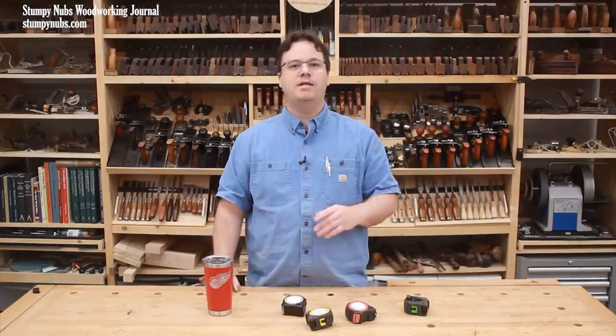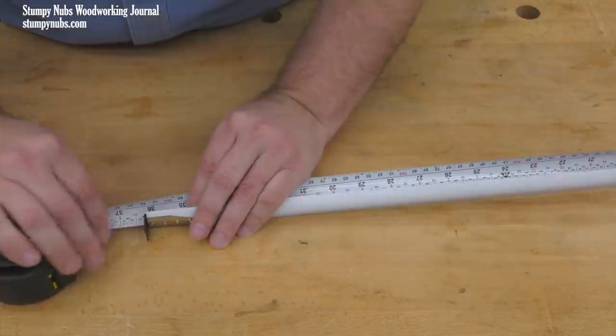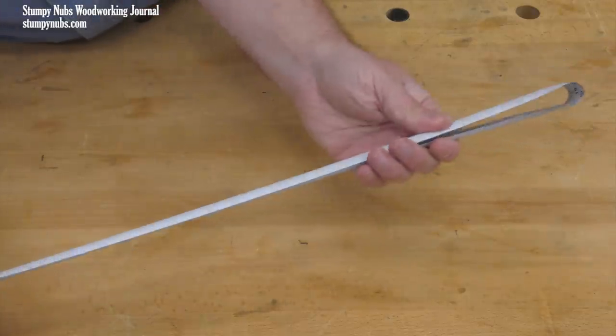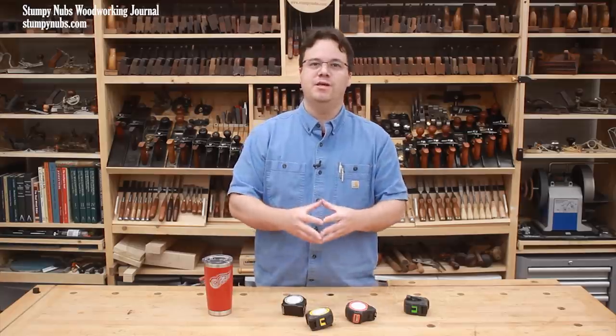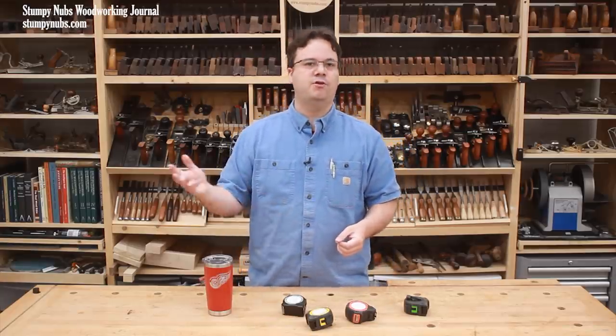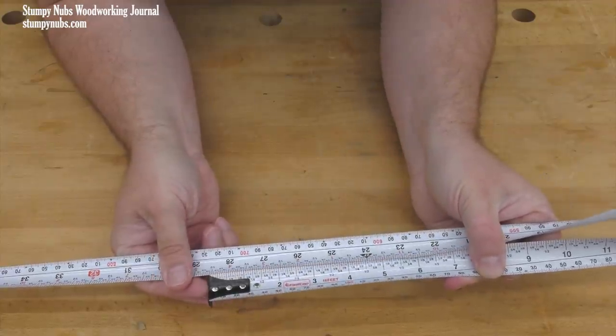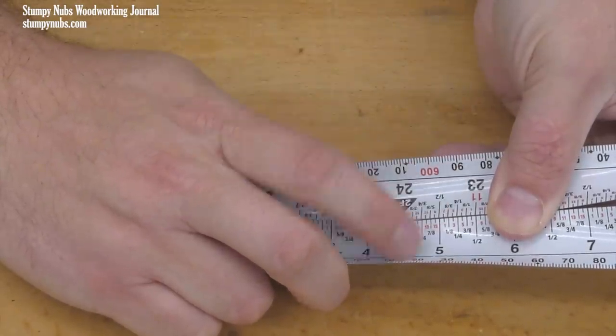If you simply want to divide a rough measurement in half such as 38 inches, fold the tape over on itself placing the tab on the 38 and you'll find half that number, 19, at the bend. A similar tip allows you to quickly subtract one measurement from another such as five and a quarter from 28 and a half. Place the tab at 28 and a half and measure back five and a quarter. The answer is right there, 23 and a quarter.